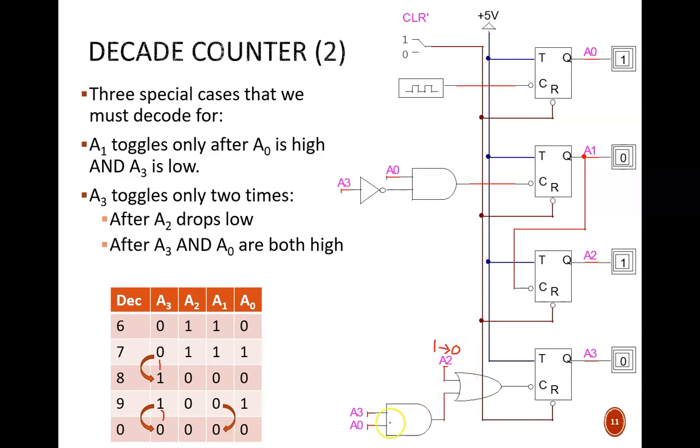Similarly, this AND gate will drop low after count 9, because A0 drops low, which in turn causes the OR gate to drop low. These negative pulses are the triggers that cause A3 to toggle.